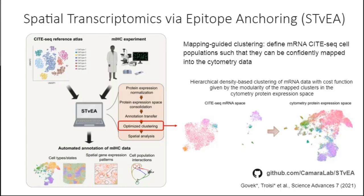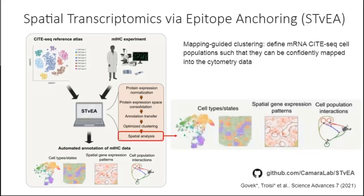Once we have done this procedure, we can perform a whole set of different spatial analyses. We can identify the different cell types and states in the multiplex immunohistochemistry tissue section, infer spatial patterns of gene expression, infer cell population interactions based on the spatial co-expression of genes coding for ligands and receptors, and so on. I will go into detail showing how these analyses work using a particular example.